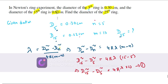Similarly, for the 25th ring: D₂₅² - D₁₅² = 4Rλ(25-15) = 4Rλ(10). This is equation 2.